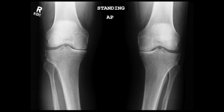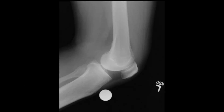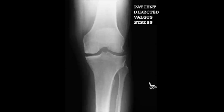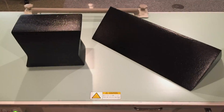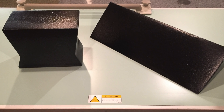In order to properly evaluate medial compartment osteoarthritis of the knee, the following radiographs should be obtained: a bilateral standing AP, a merchant or sunrise view of the affected side, a true lateral of the affected side, and a valgus stress view that is used to test the functionality of the lateral compartment. The following video is a guide on how to obtain the patient-directed valgus stress view.